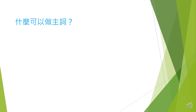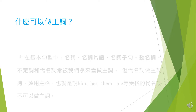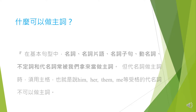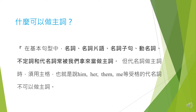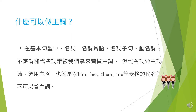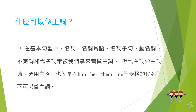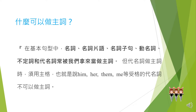我們說主詞非常重要，每一個句子一定要有主詞。問題是什麼可以做主詞呢？原來在基本句型中，名詞、名詞片語、名詞子句、動名詞、不定詞和代名詞常常被拿來當作主詞用。但是代名詞做主詞的時候，它有一個限制。